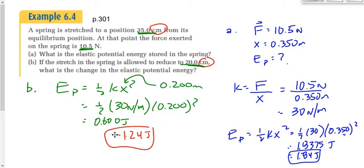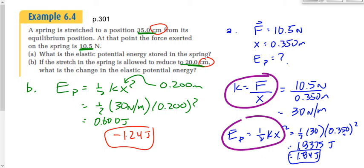The big takeaways from this question: first, we commonly need to combine F equals kx with Ep equals one-half kx squared. Second — and this is probably the bigger one — since we haven't changed springs, the spring constant stays the same. Unless you change springs or permanently deform the spring, k doesn't change even if f and x are different.